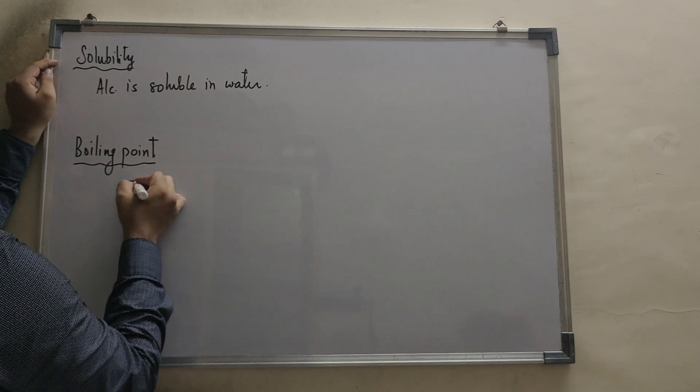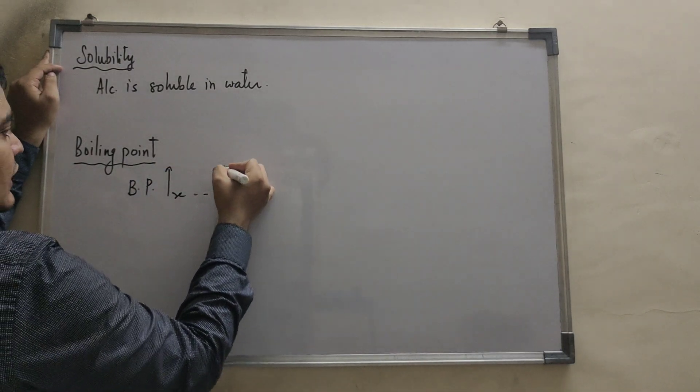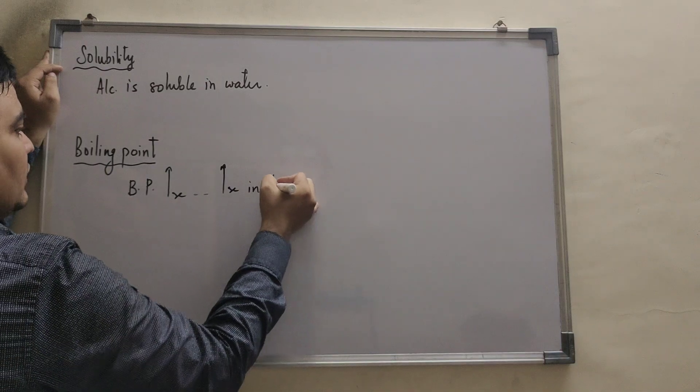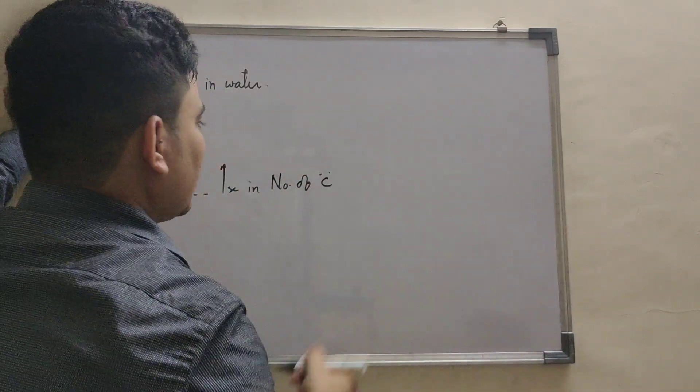And their boiling point, their boiling point increases, with increasing number of carbon. Barabar, unme, jaisa-jaisa, number of carbon badhta jayega.